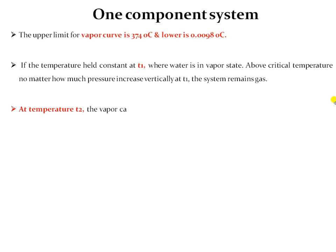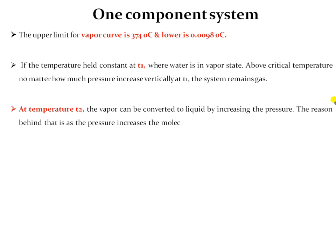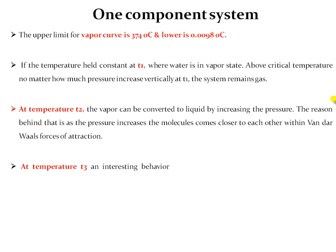The upper limit of the vaporization curve is 374 degrees centigrade and the lower limit is 0.0098 degrees centigrade. If temperature is held constant at T1, where water is in a vapor state and above critical temperature, no matter how much pressure is increased vertically at T1, the system remains in the gaseous state — increasing pressure does not cause the system to enter the liquid phase. At temperature T2, vapor can be converted into the liquid phase; as pressure increases, molecules come together and convert to the liquid phase due to van der Waals forces of attraction.